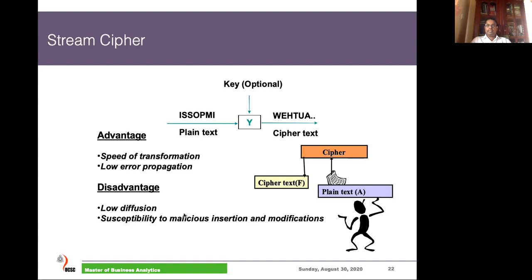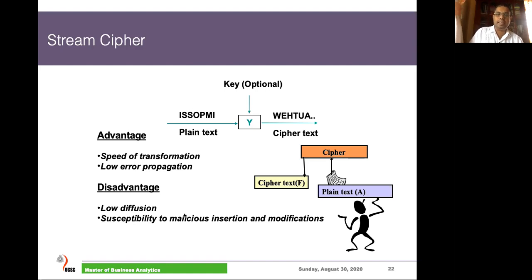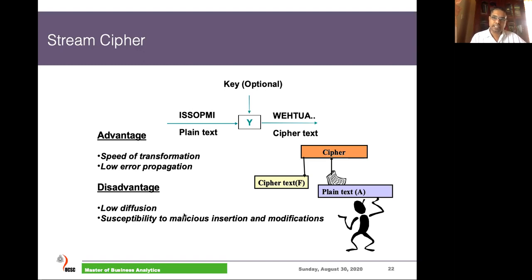So in stream ciphers, attackers can insert or modify the data without being detected. Similarly, stream ciphers have low diffusion — diffusion refers to the property of hiding information within a set of characters.